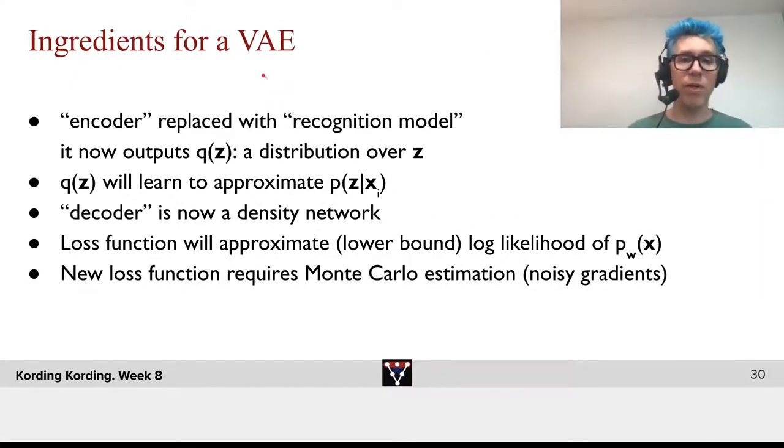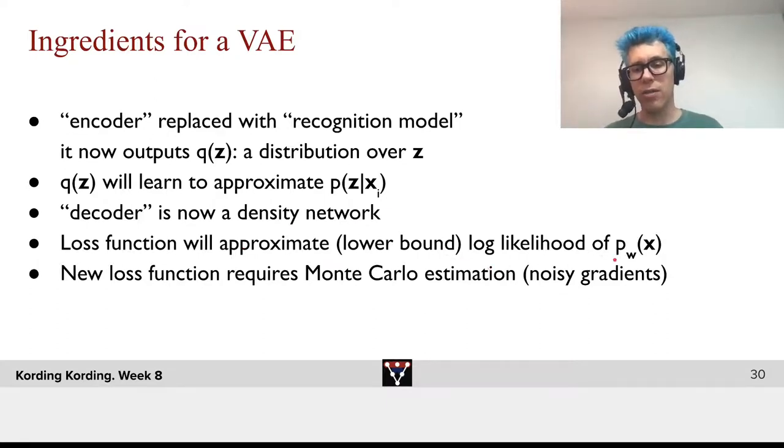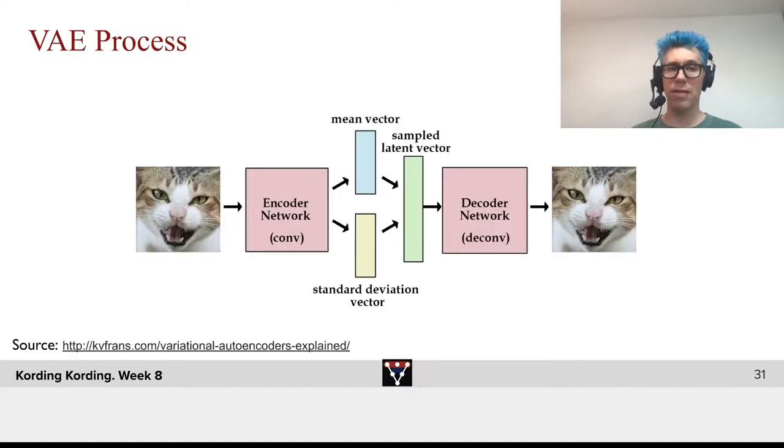Now, what are the ingredients for the variational autoencoder? We replace the encoder with a so-called recognition model. It now outputs q of z, a distribution over z. q of z will be learned to approximate p of z given xi. The decoder is a density network. And now the loss function we'll use is an approximate, so it's a lower bound of the log likelihood of the probability of x. The probability under a model that is specified with parameters w. The loss function will require Monte Carlo estimation. Because, as we saw before, we can rewrite that integral, and we will be approximating it with Monte Carlo samples.